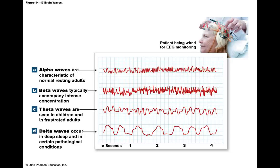A seizure is a temporary disorder with abnormal movements, unusual sensations, or inappropriate behaviors. The signs and symptoms depend on what area of the brain is affected — if the primary motor cortex is affected, a person will have abnormal movements; if the auditory cortex is affected, they'll hear strange sounds. Seizures produce marked changes on the EEG that may spread across the cortex.